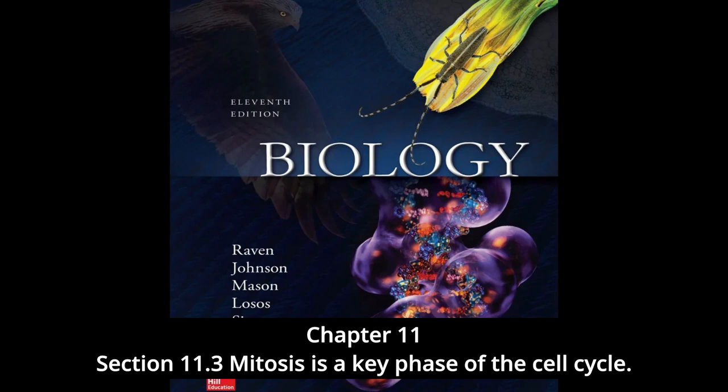In plant cells, a similar bridge of microtubular fibers forms between opposite poles of the cell, although centrioles are absent. During the formation of the spindle apparatus, the nuclear envelope breaks down and the endoplasmic reticulum reabsorbs its components. The spindle fibers then extend completely across the cell from one pole to the other; their orientation determines the plane in which the cell will subsequently divide — through the center of the cell, at right angles to the spindle apparatus.